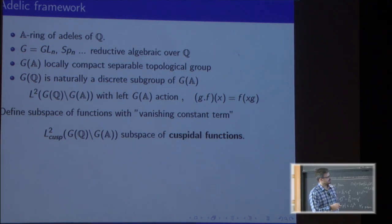We have a natural regular action of G(A) by right multiplication. We can define a subspace of functions that are called cuspidal functions.